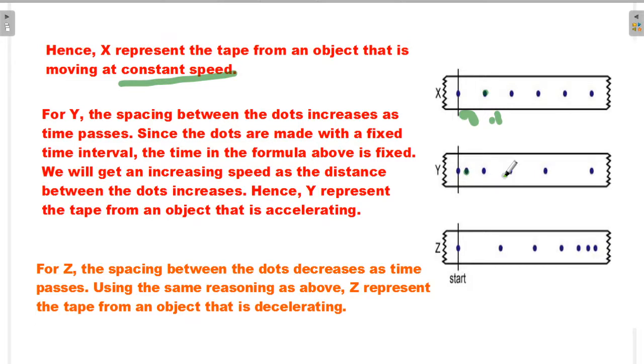For Y, the spacing between the dots increases as time passes. Since the dots are made with a fixed time interval, we get an increasing speed as the distance between dots increases. Hence, Y represents the tape from an object that is accelerating.